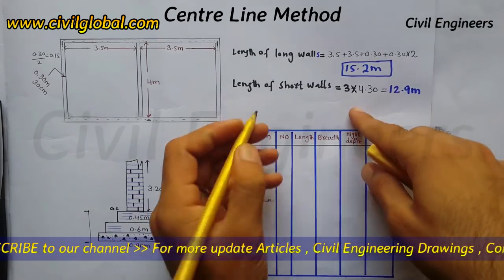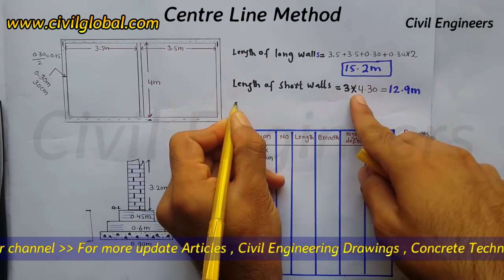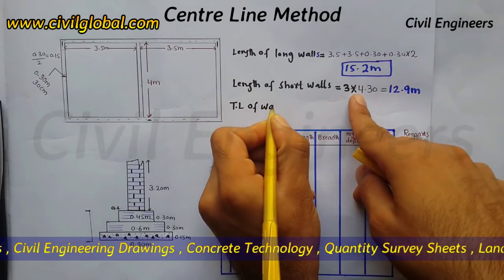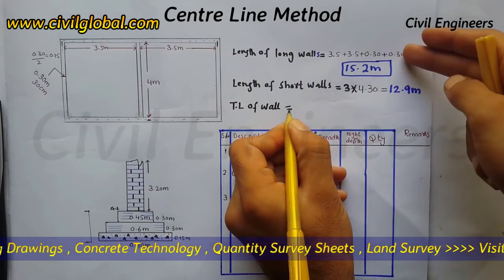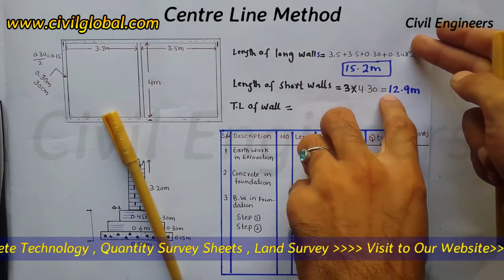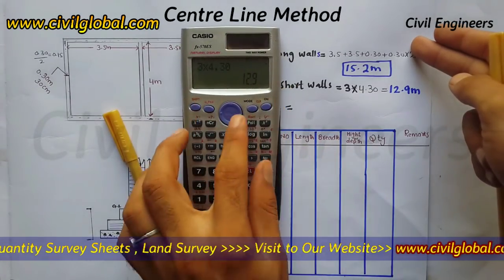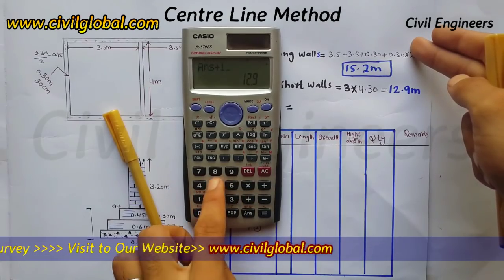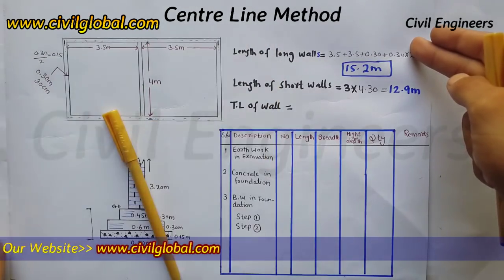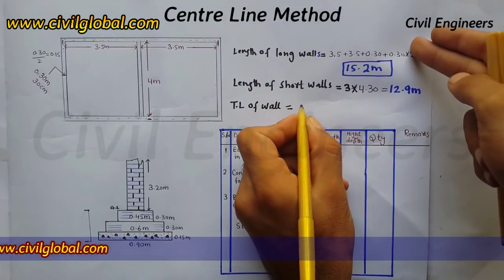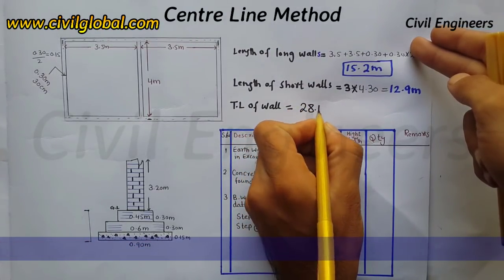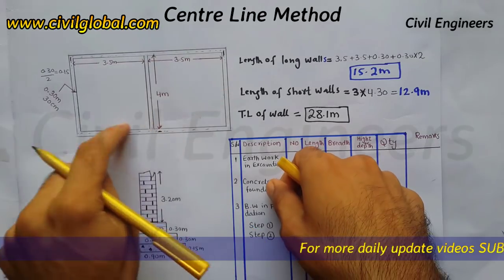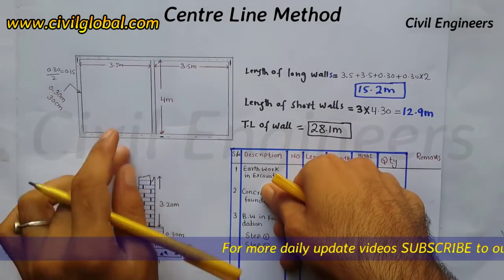Now we find the total length of wall: long wall plus short wall = 15.2 plus 12.9 equals 28.1 meters. This 28.1 meters is the total centerline length for these two rooms.